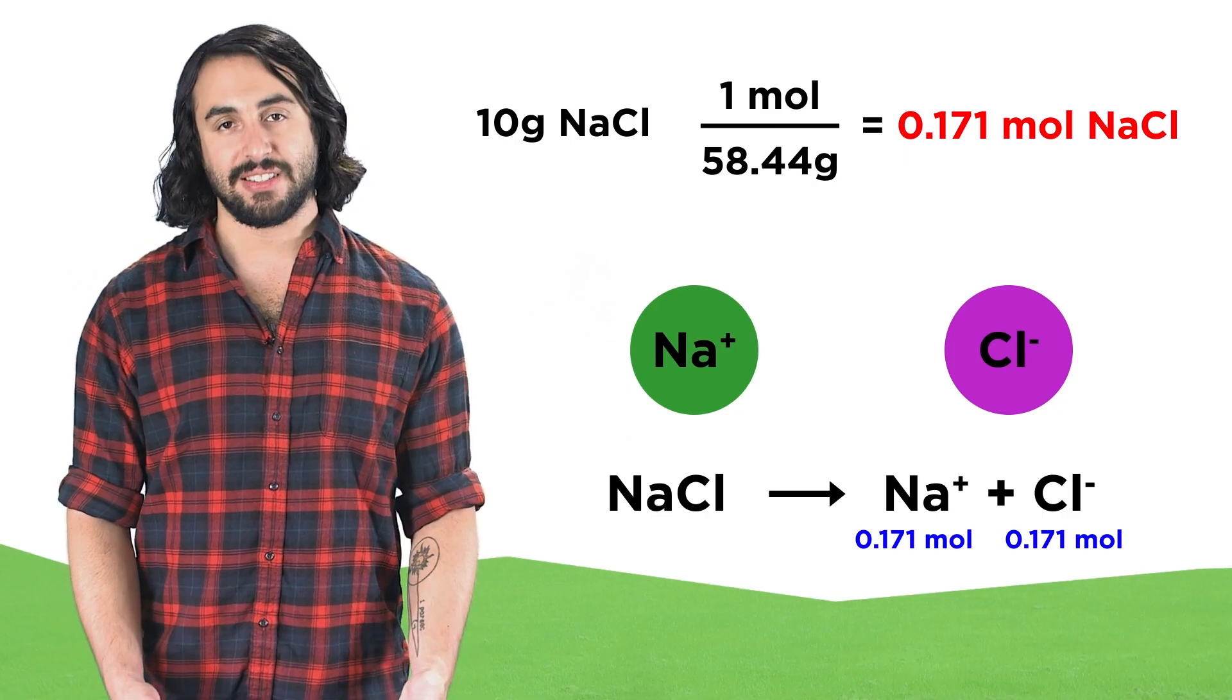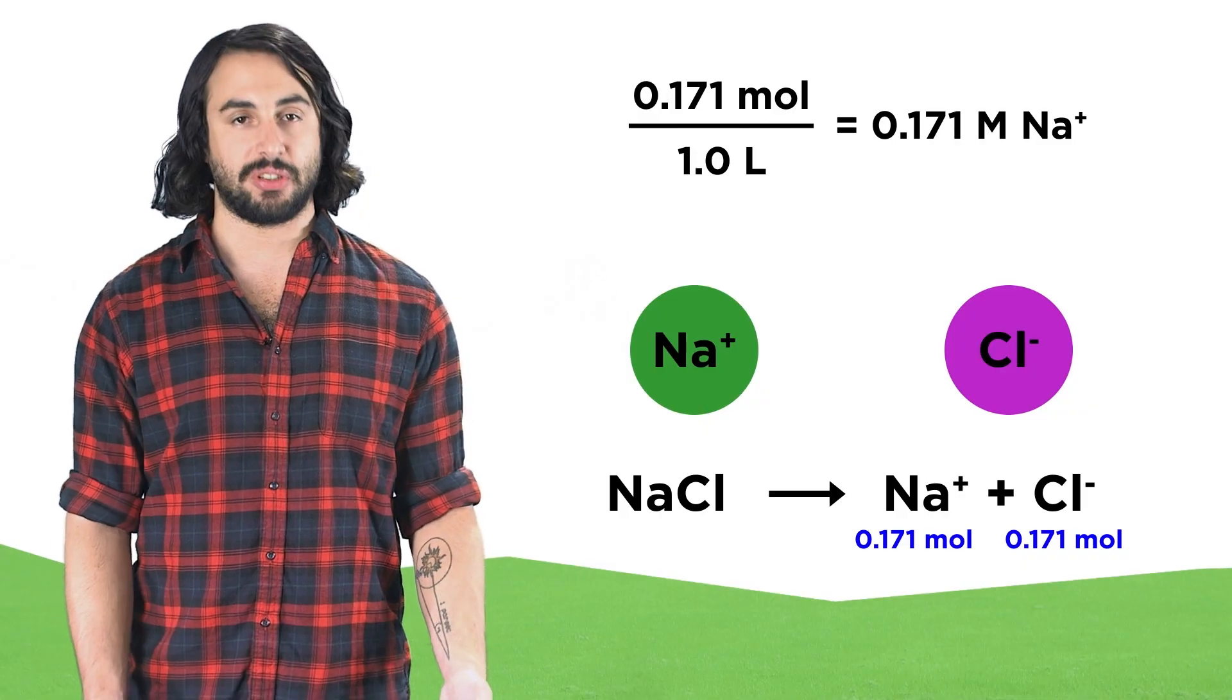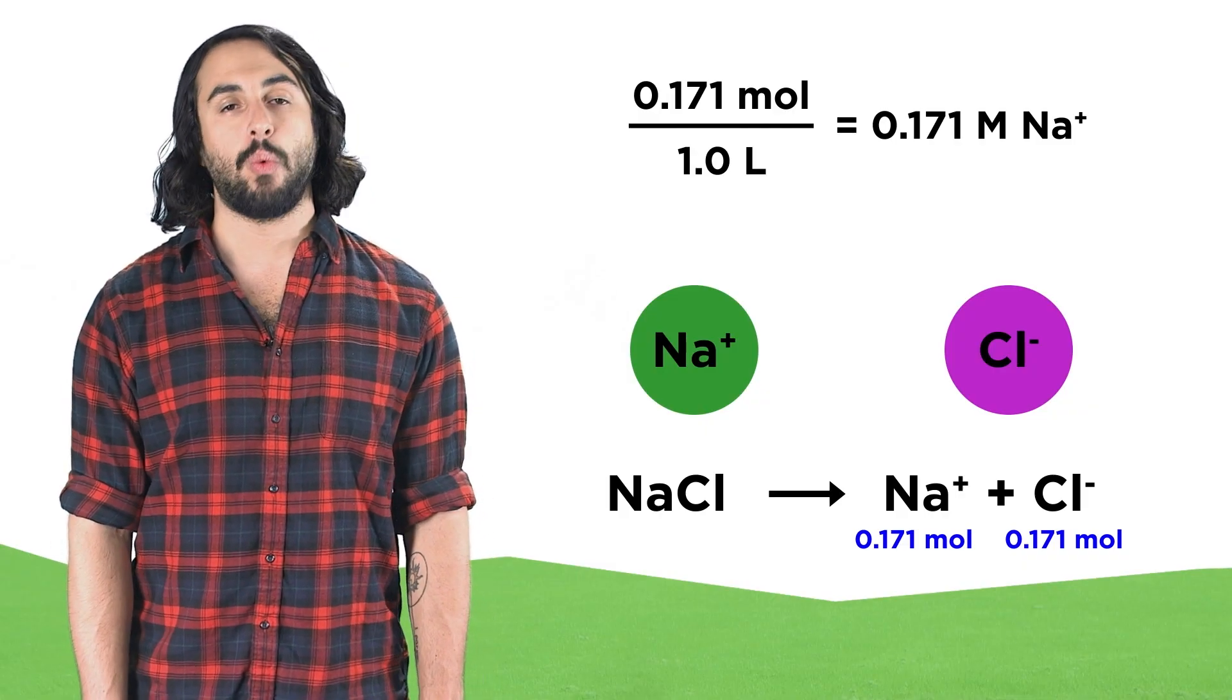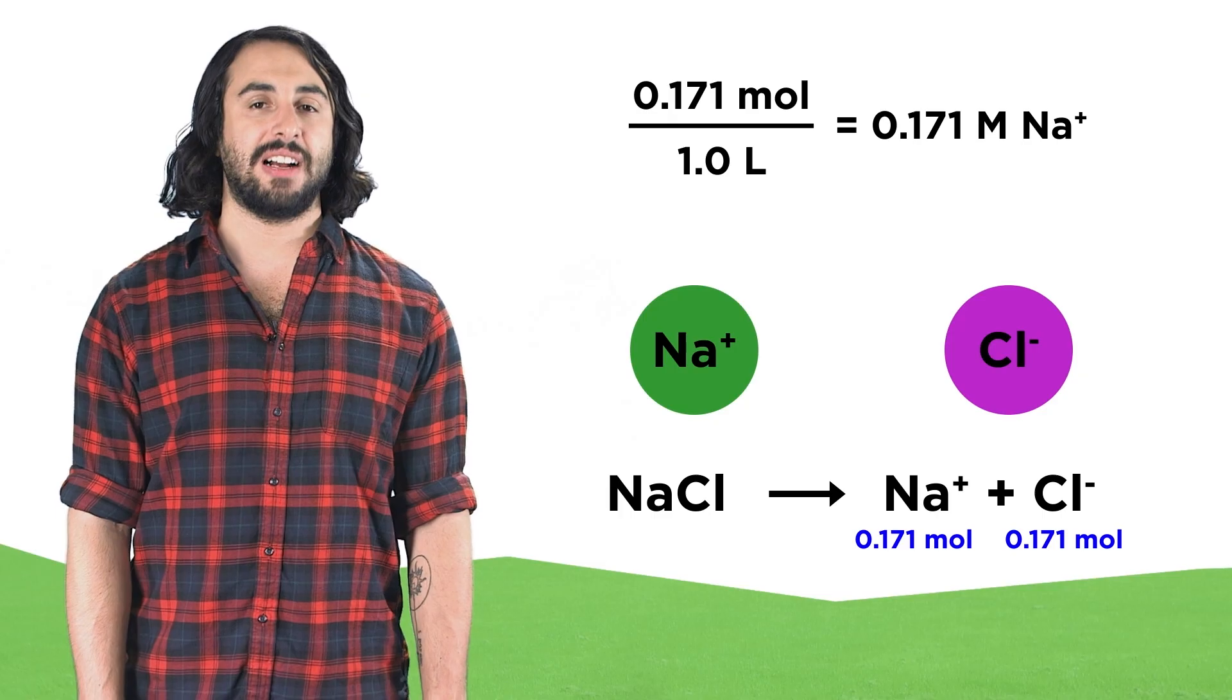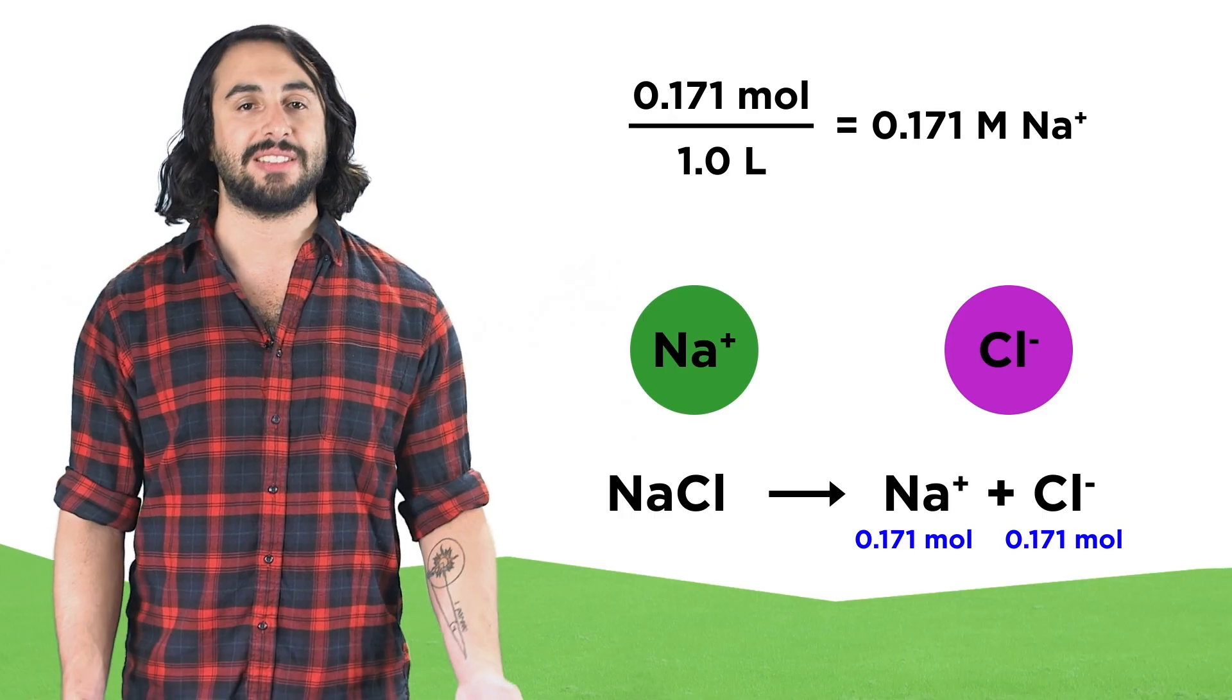To then find the concentration, we simply take the moles of the solute and divide by the volume of the solution, and since this is a one liter solution, we get concentrations of 0.171 molar for each of these ions.